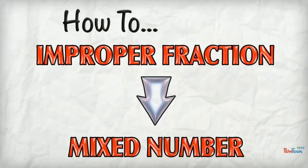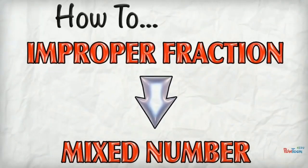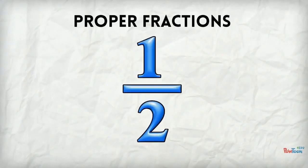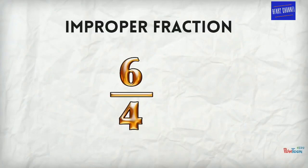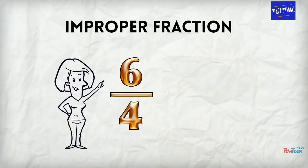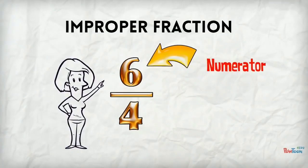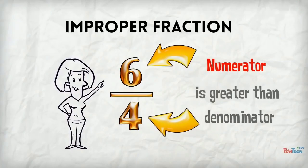How to change an improper fraction to a mixed number. Proper fractions look like this. The numerator, the top number, is always less than the denominator. We are used to seeing this kind of fraction. But check out the improper fraction. It is top heavy. The numerator is greater than the denominator. We have to make sense out of this.